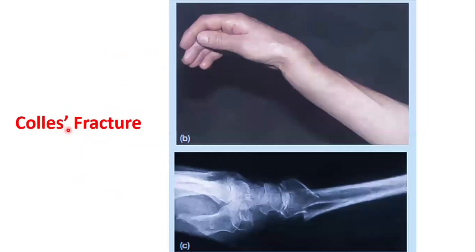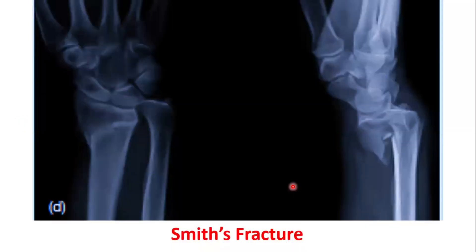Looking at the radiographs: in the Colles' fracture you can see the soft tissue and dorsal displacement — the distal segment is displaced dorsally. In the Smith's fracture, you can see the anterior displacement of the broken segment.